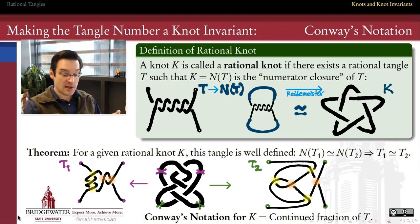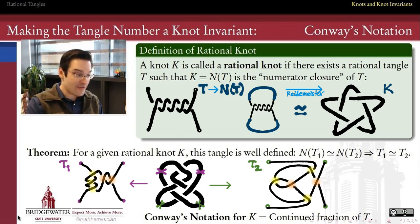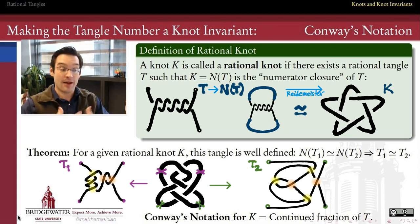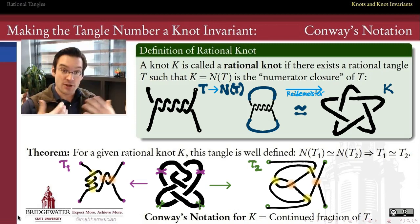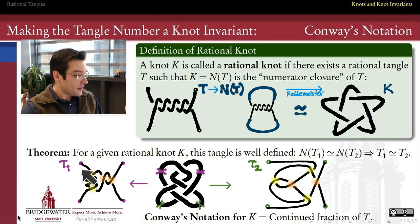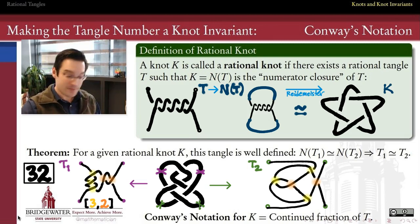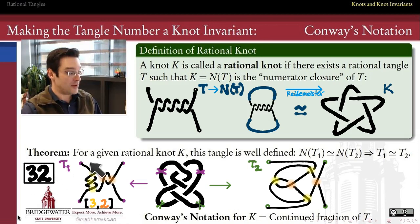This process by which we associate a tangle to a rational knot is a well-defined, one-to-one correspondence. If I take the numerator closure of two rational tangles and get the same knot, then the two rational tangles must have been the same in the first place. That observation leads us to Conway's notation for a rational knot: it takes the rational tangle associated with that knot, determines the coefficients in its continued fraction representation, and uses those coefficients as a notation. So this knot at the bottom is really just the continued fraction [3, 2], and Conway's notation writes the integers next to one another: 32.